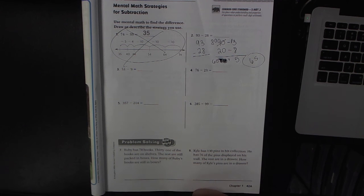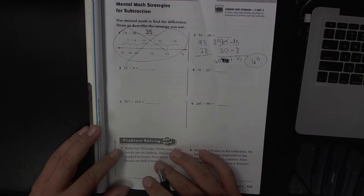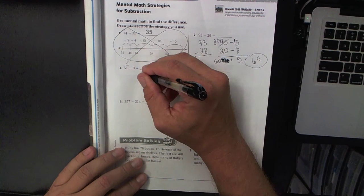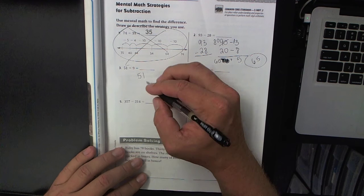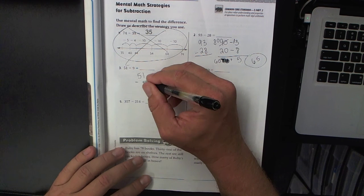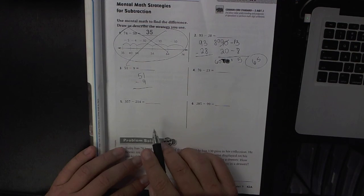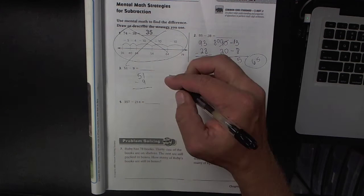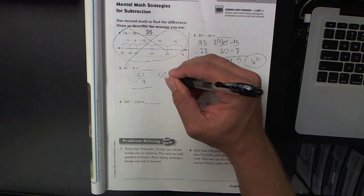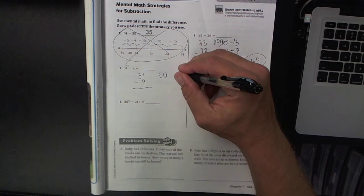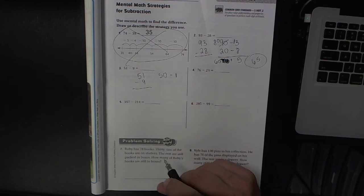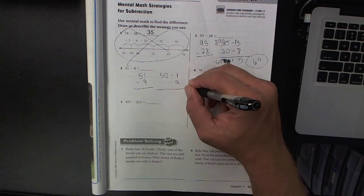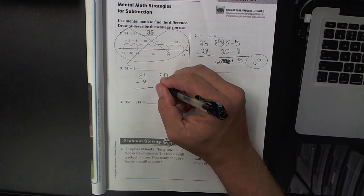Let's look at number 5. Well I'll do number 3. Once again you want to write them vertically, 51 minus 9, and you're breaking it apart by place value. The 5 is worth 50, the 1 is worth 1, the 9 is in the ones place so it is worth 9.